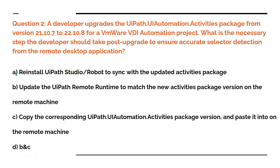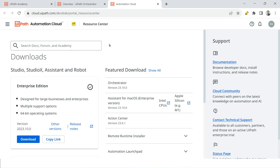The options are: A — reinstall UiPath Studio on the robot with the updated activity package; B — update the UiPath Remote Runtime to match the new activities package version on the remote machine.